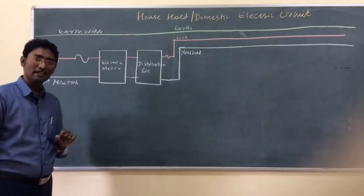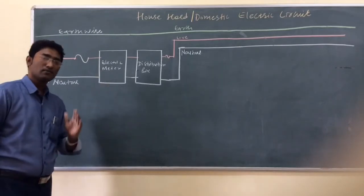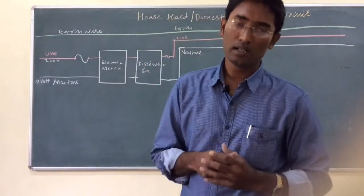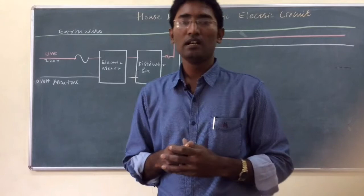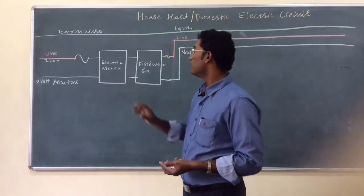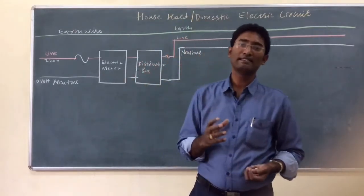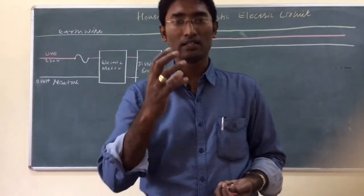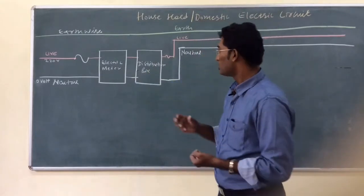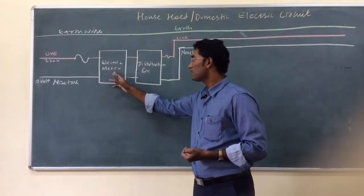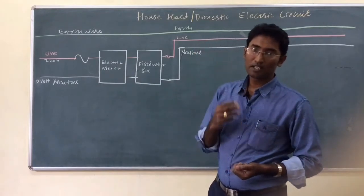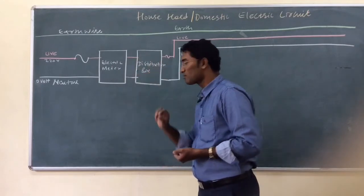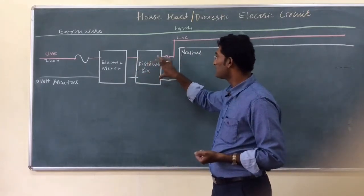The live wire and neutral wire then enter the electric meter. The electric meter is an instrument fitted by electricity-providing companies like MSEB. This meter measures the number of units of energy that the house has consumed in a month.